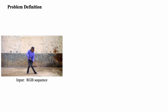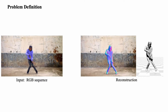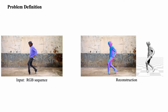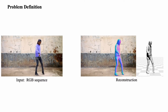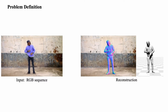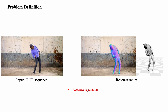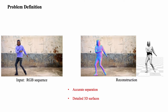Given a single RGB video sequence, we reconstruct the detailed 3D surface geometry. However, reconstructing humans that move naturally and doing so from monocular videos is difficult. To solve this problem, one must accurately separate humans from arbitrary backgrounds, and one must recover detailed 3D surfaces from highly ambiguous inputs.